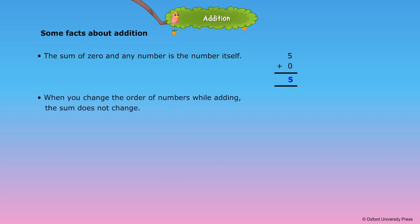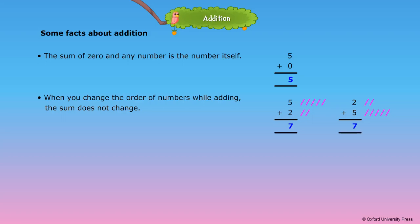When you change the order of numbers while adding, the sum does not change. 5 plus 2 is equal to 2 plus 5, which is equal to 7.